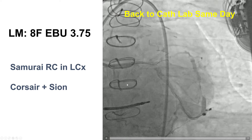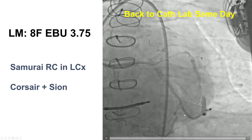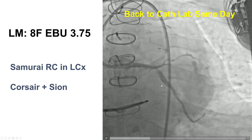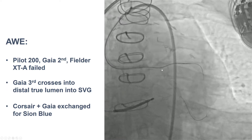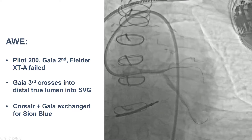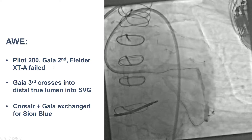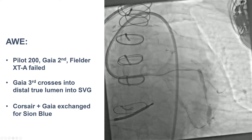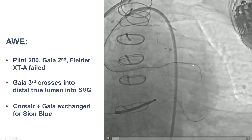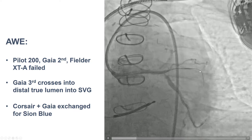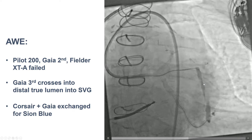We used a Corsair and placed a protection wire into the circumflex, then tried antegrade wire escalation with various guide wires including Gaia 2nd, Fielder XTA, and Pilot 200, which failed. However, a Gaia 3rd did cross the CTO into the connecting SVG segment.